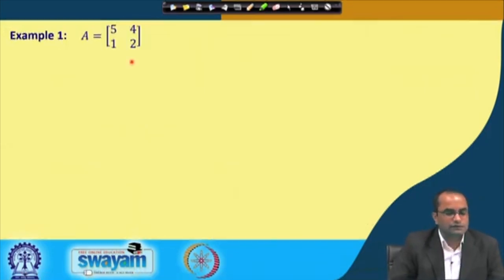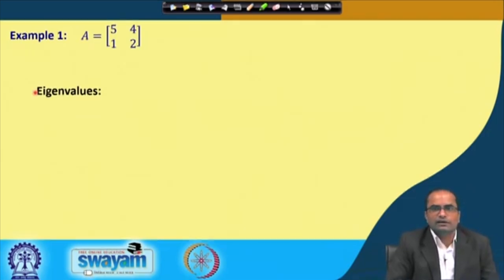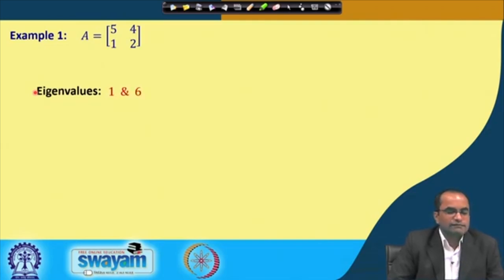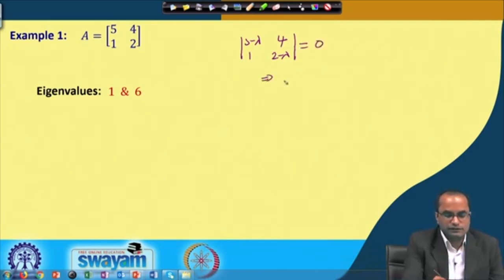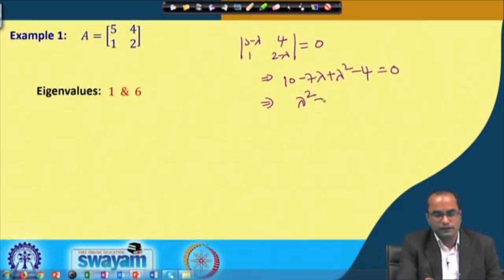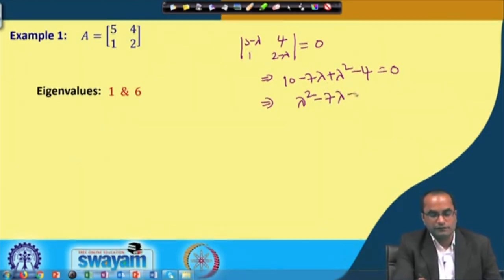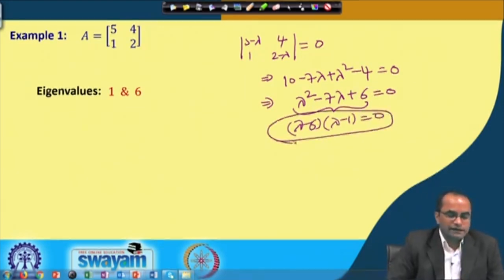Let us consider the example with A = [5, 4; 1, 2]. We compute the eigenvalues: the characteristic polynomial gives λ² − 7λ + 6 = 0, which factors as (λ − 6)(λ − 1) = 0. So the eigenvalues are λ = 1 and λ = 6.